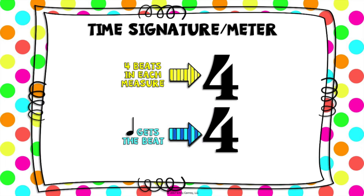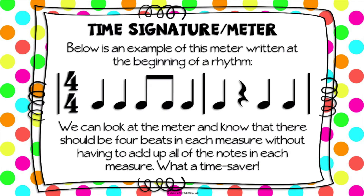Think about it as how there are four quarters in a dollar — four beats in a measure, the quarter note gets the beat. Here's an example of how our time signature is written out. If you take a look at the left side of your screen, you see that four over four. We already know there are gonna be four beats in a measure and the quarter note gets the beat. That really saves us time because we don't have to count it up like we did last week.